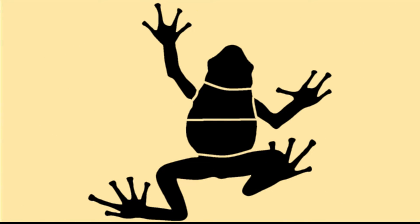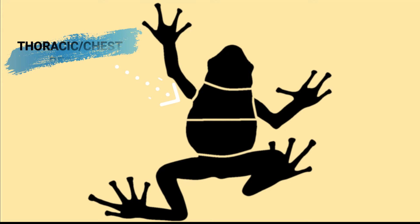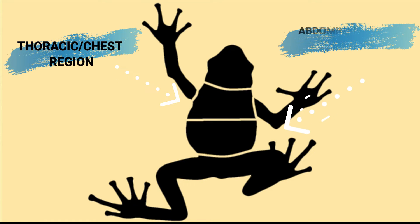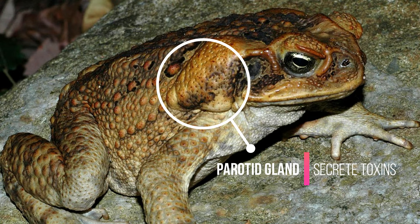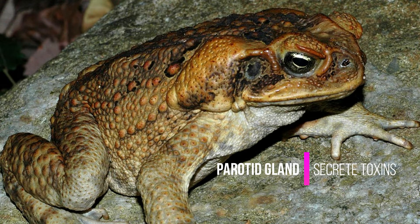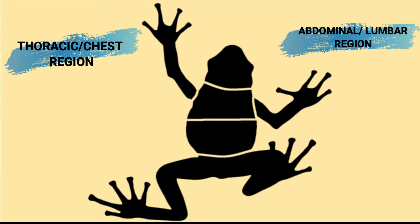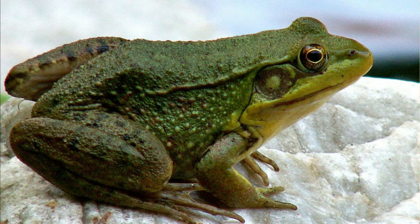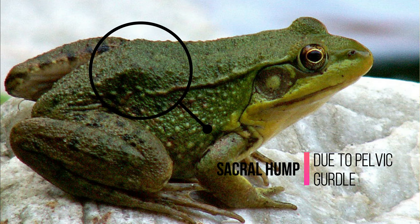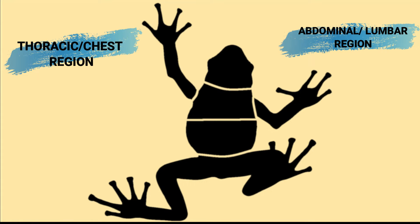Then we have the trunk, which is divided into the thoracic or chest region, which is the anterior half, and the abdominal or lumbar region, which is the posterior half. In the thoracic region behind the eardrum, you can see the parotid gland. The parotid gland secretes alkaloid substances which smell toxic to predators, thus sending predators away. What we see on the ventral portion is the abdominal region, while at the dorsal is the lumbar region. For frogs, the sacral hump is located at the lumbar region, which emerged because of the lump of the pelvic girdle. At the end of the trunk is a small opening called the anus, where waste exits.